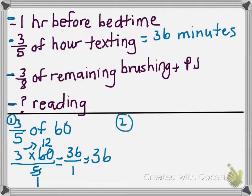Step two. Three-eighths of the remaining time brushing her teeth and putting on pajamas. So I have to first figure out how much time is remaining. I started off with sixty minutes in one hour, and I've already spent thirty-six of those minutes texting. So let's subtract.